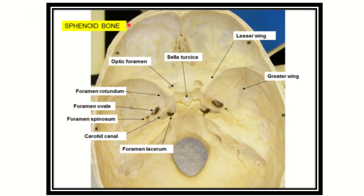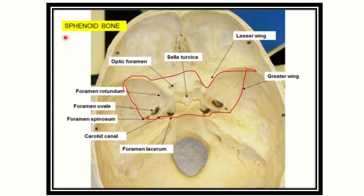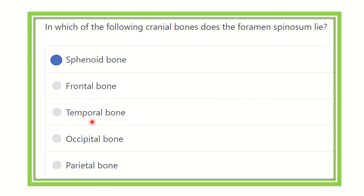In this picture we can see the sphenoid bone and its boundary. The foramen spinosum lies in the sphenoid bone along with other important foramina such as the optic canal, superior orbital fissure, foramen rotundum, foramen ovale, foramen spinosum, and the carotid canal. So our final answer is the sphenoid bone.